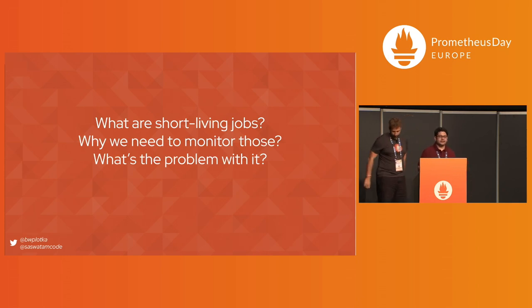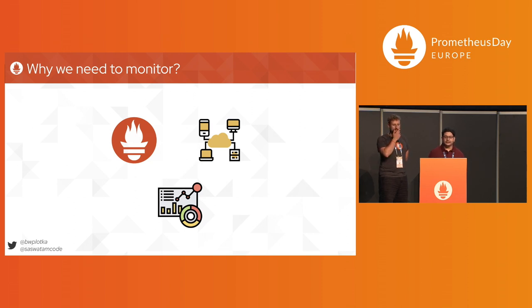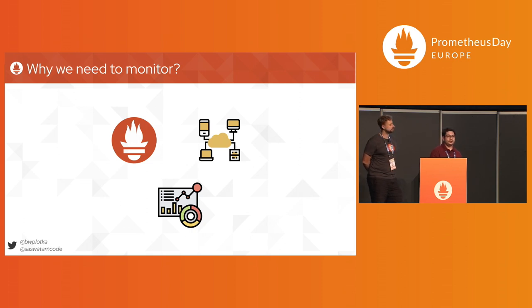For today's talk, let us begin by trying to answer some initial questions: what exactly are short-living or fleeting jobs, and why monitoring them is so crucial, and what are the problems we face when we try to monitor them. When we talk about monitoring, we usually refer to the metric signal of observability. With the continuous growth of system complexities and data processed every second, we need monitoring to understand the state of our workloads — accomplished by tools like Prometheus, designed to collect and query metrics and notify humans about problems.